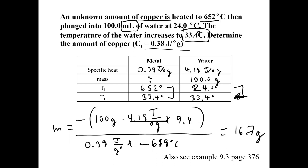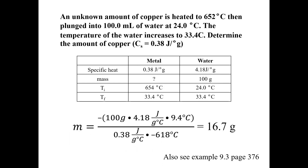You can always calculate Q with Q = m × Cs × ΔT, setting the two substances equal with the appropriate negative sign. A similar example is in your book on page 376. When we come back, we are going to look at pressure-volume work and start getting closer to what is called enthalpy.